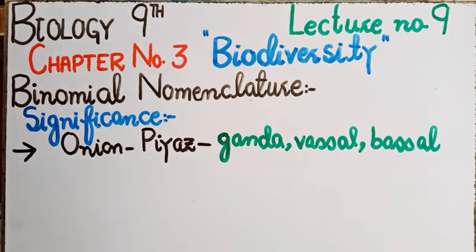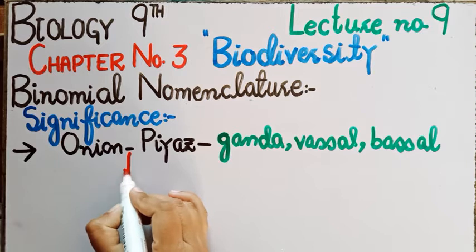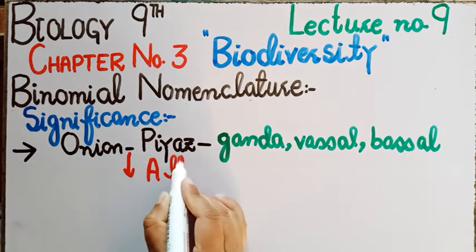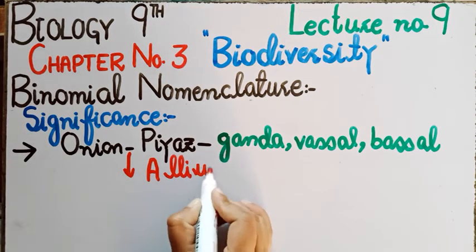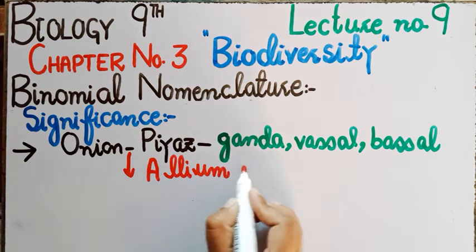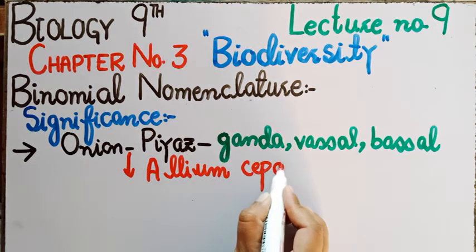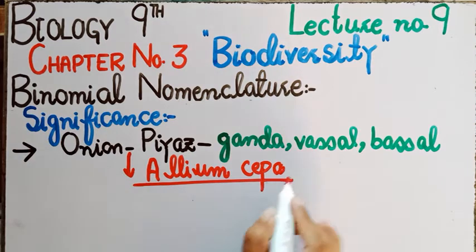تو پیاز یا onion کا scientific name رکھا گیا Allium cepa۔ اب جب بھی Allium cepa کا نام آئے گا science کی دنیا میں یا educated circles میں، لوگ جان جائیں گے کہ پیاز کی بات ہو رہی ہے۔